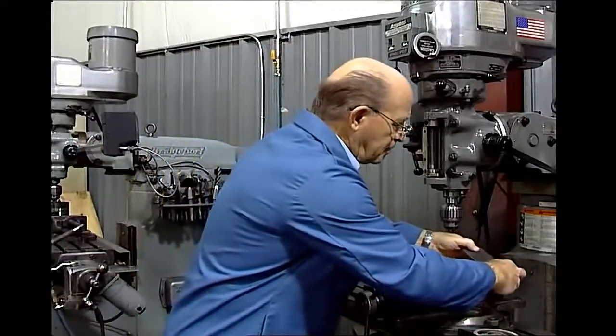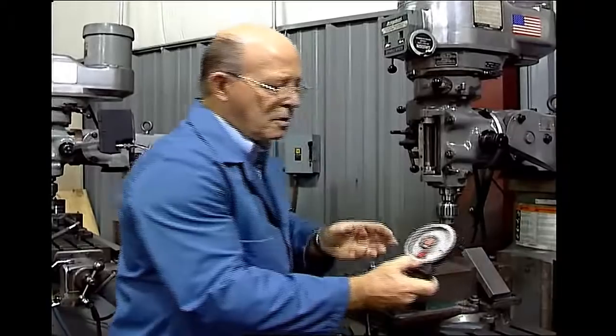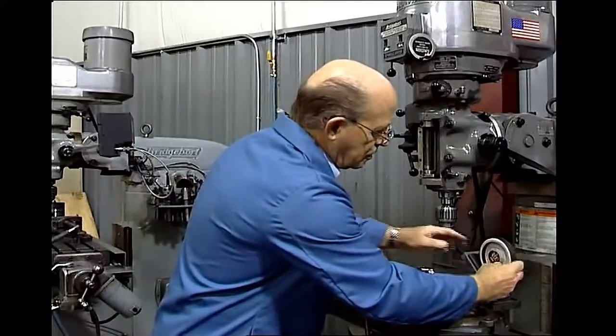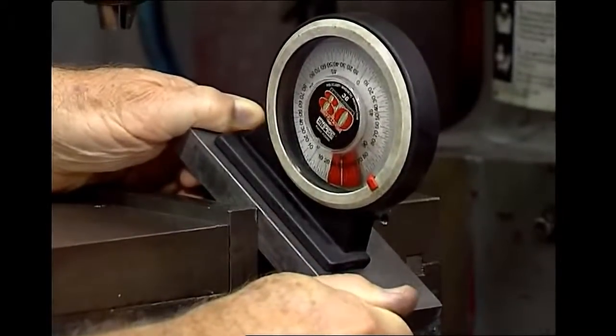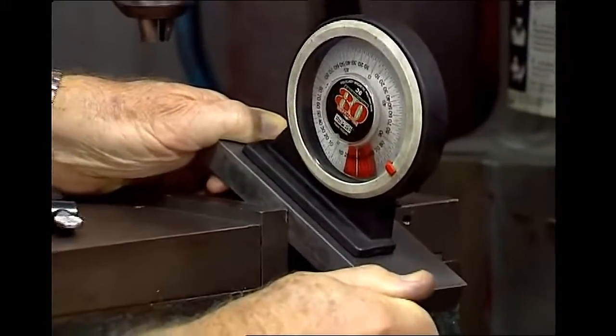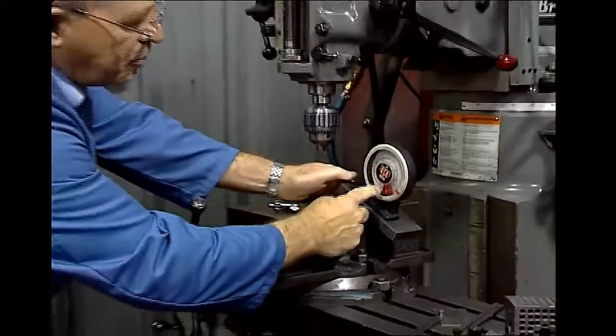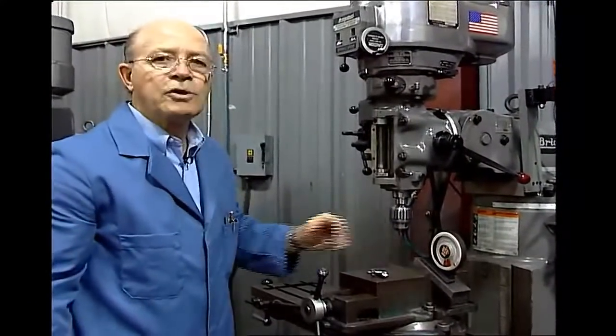We put this in a vise, and we have over here, this is a magnetic protractor. Now I can tilt this and bring it right to 30 degrees. And that magnetic protractor will give me a pretty close 30 degrees.